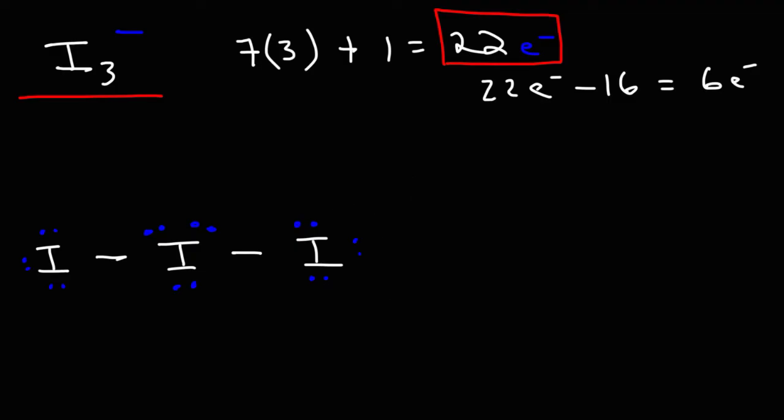But let's count up the electrons. So we have 2, 4, 6, 8, 10, 12, 14, 16, and then 18, 20, 22. So we have the right number of electrons in this structure.